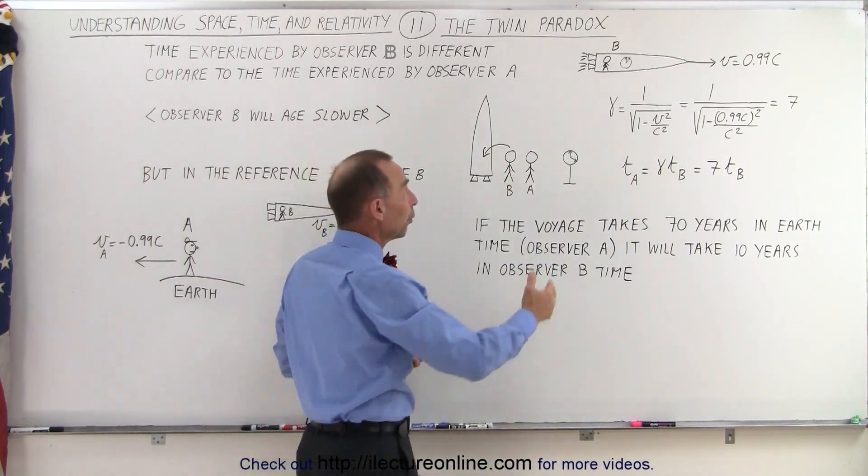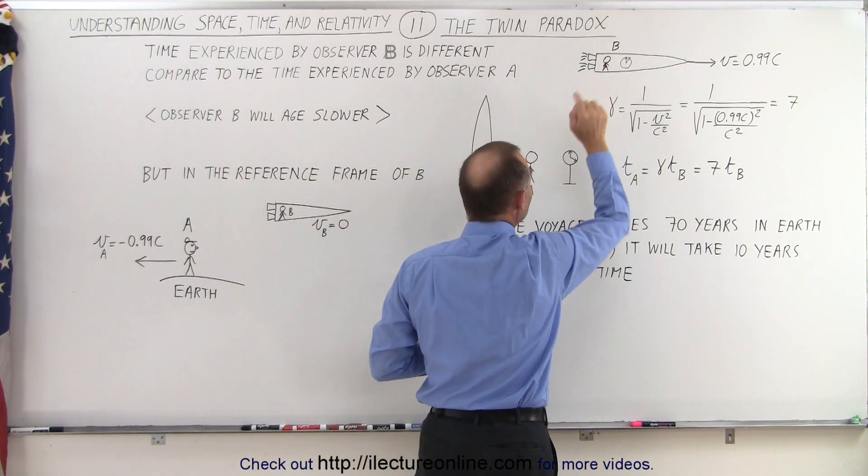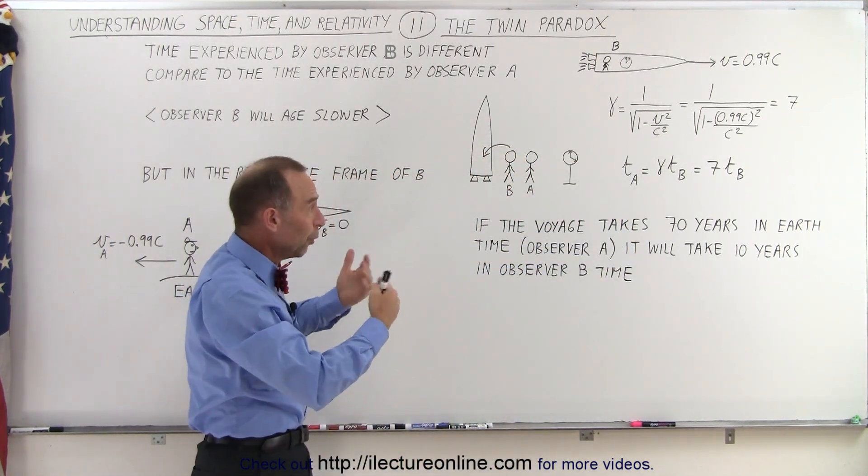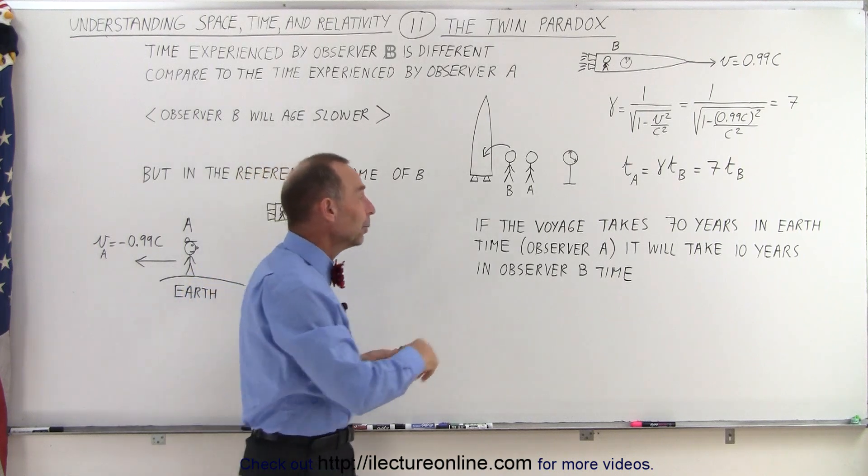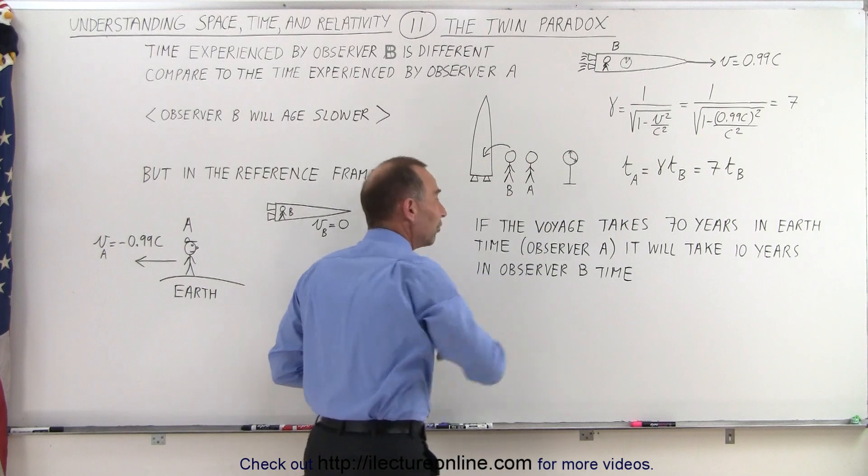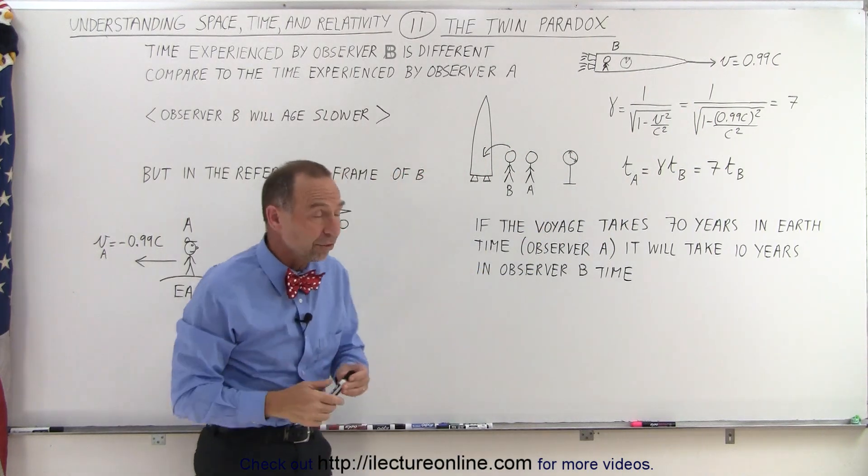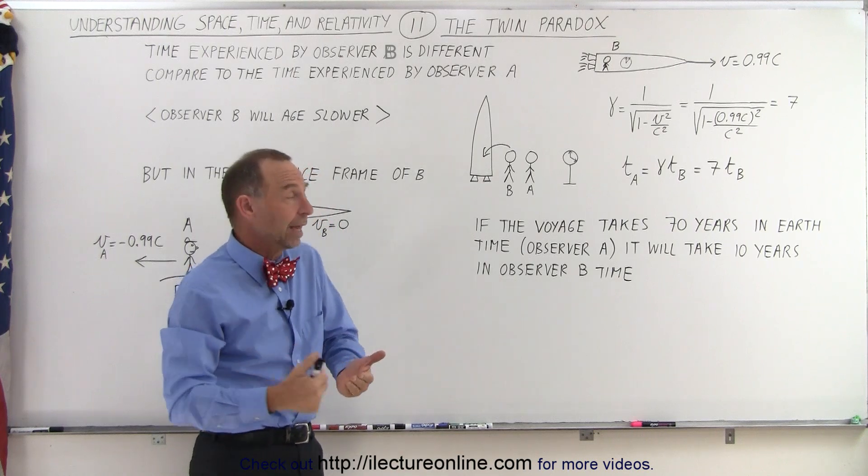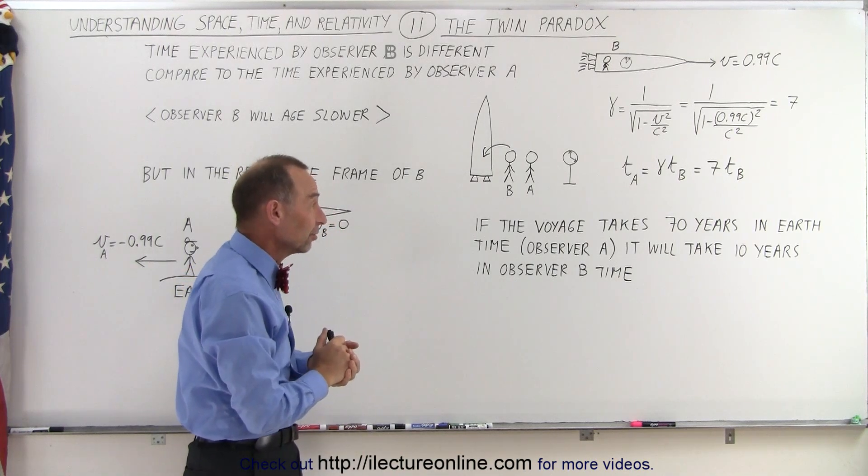In other words, if one year goes by for observer B, 7 years will go by for observer A. And if the voyage lasts for 70 years Earth time, it will only take 10 years for observer B, and when observer B returns after being gone for 70 years, observer B will only have aged 10 years, while observer A will have aged 70 years.